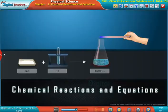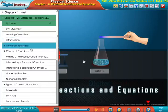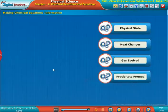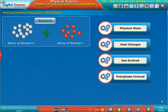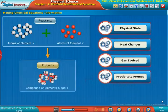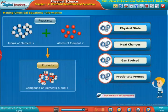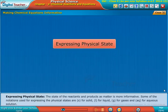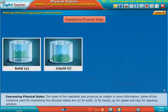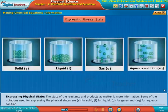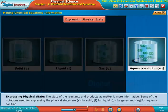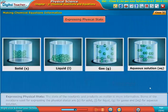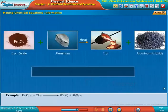Welcome to the chapter Chemical Reactions and Equations. Now let us learn about the factors that make a chemical reaction more informative. Click each step to learn more. Expressing physical state: the state of the reactants and products as matter is more informative. Some of the notations used for expressing the physical state, for example, consider the equation on screen.